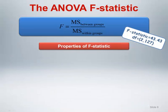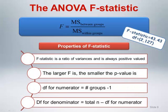The F-statistic is actually a ratio of variances. The numerator represents the variability between the group means, and the denominator represents the variability within the groups. Properties of the F-statistic include: it is always positive valued. Under the null hypothesis of no difference between the groups, we would expect the variability between the groups to be comparable to the variability within the groups, which would yield an F-statistic near 1. Under the alternative hypothesis, we would expect the variability between groups to be larger than the variability within groups; thus, the larger F is, the smaller the p-value is.